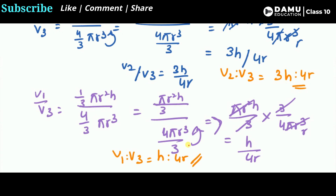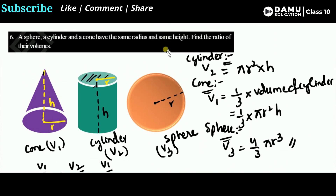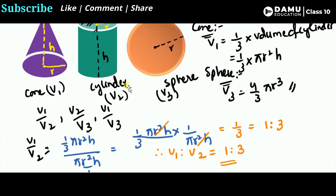So the ratios come out with h and r terms that do not cancel. The problem states that height and radius are the same for all three shapes, but it does not say that h and r are equal to each other. Therefore, the ratios V2:V3 = 3h:4r and V1:V3 = h:4r remain in this form. Thanks for watching — please subscribe.